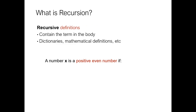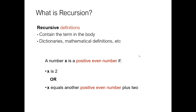Recursive definitions contain the term in the body of the definition, and this is actually really common in mathematical definitions — generally done in a meaningful way. For example, X is a positive even number if number one, X is two, or X is equal to another positive even number plus two. That means four will be a positive even number because it's equal to two plus two. Six will be a positive even number because it's equal to four plus two. I can just keep going — I've got a base case where X is equal to two, and a recursive case using the term positive even number.